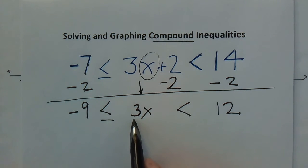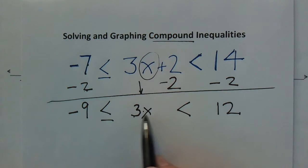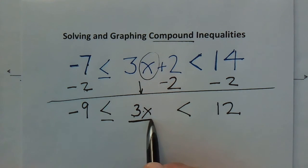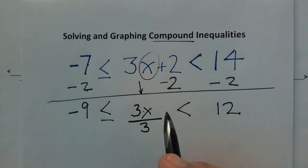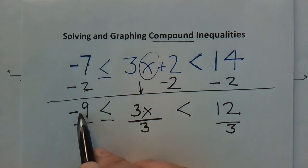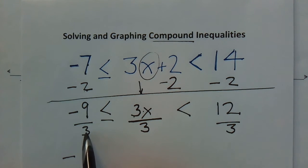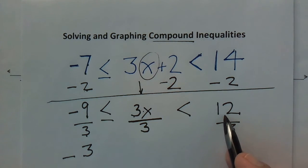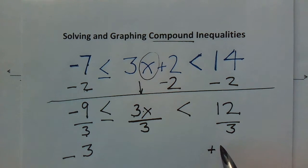We continue solving. I need to remove the 3 from 3x. The relationship between 3 and x is multiplication, so we do the opposite: divide by 3. If I divide one part, I divide all three sides. On the left, negative 9 divided by positive 3 — opposite signs give a negative result — so that's negative 3. On the right, positive 12 divided by positive 3 gives positive 4.